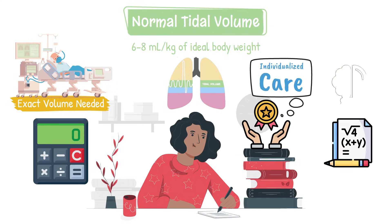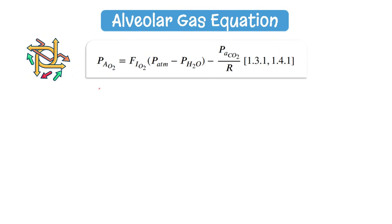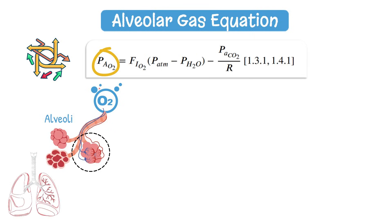Formulas give you a framework for thinking clinically. Take, for example, the alveolar gas equation. It may look complex at first, but it allows you to determine how much oxygen is actually reaching the alveoli, which are the tiny air sacs in the lungs where gas exchange takes place.